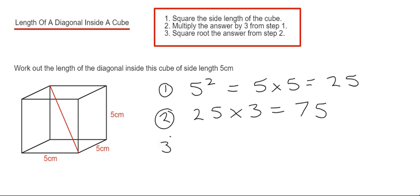And then step three is we square root our last answer. So the square root of 75 is 8.66.